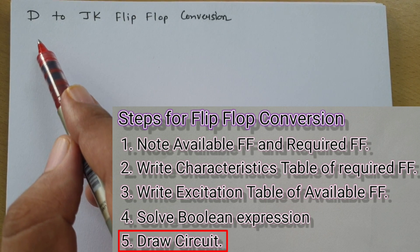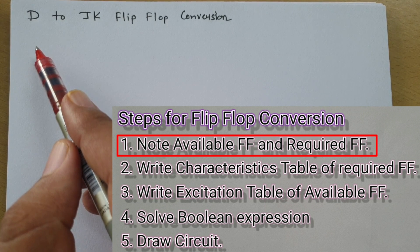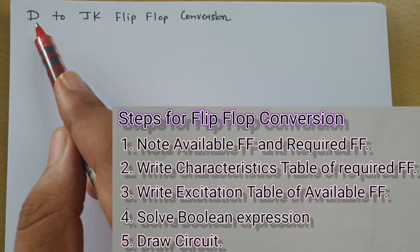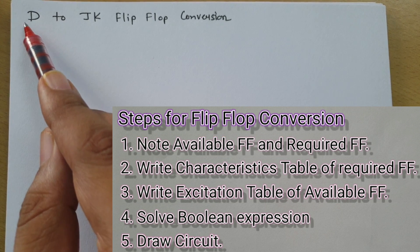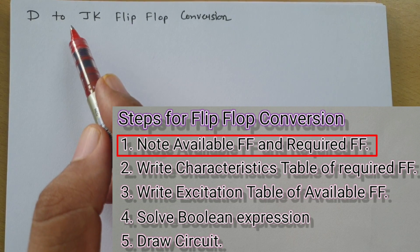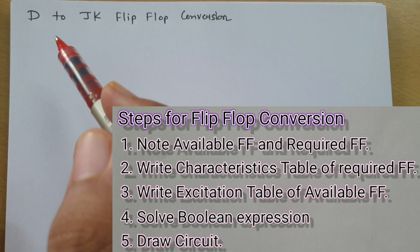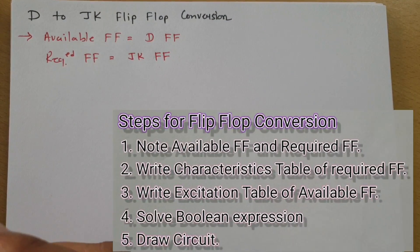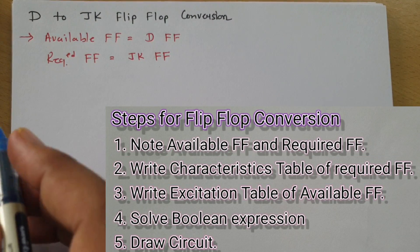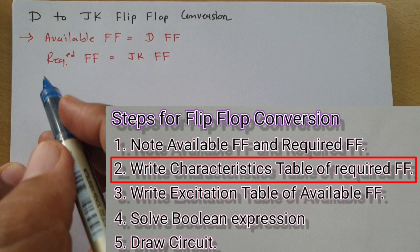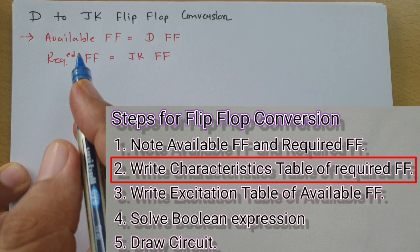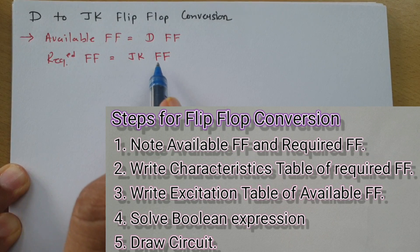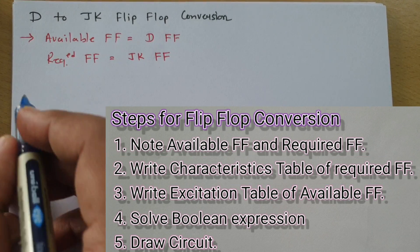Let us begin with the first step — noting that the available flip-flop is D flip-flop and the required flip-flop is JK flip-flop. The next step is to write the characteristic table for the required flip-flop, which is the JK flip-flop.